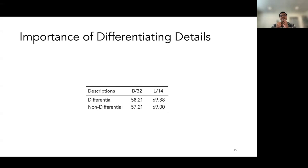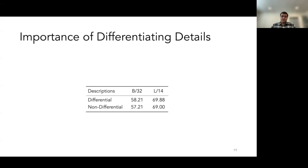We analyze what drives the value of differentiating details. We define two types of descriptions: differential descriptions, which are attributes that differentiate ambiguous classes, and non-differential descriptions, which are factually correct but do not separate ambiguous classes — such as both sparrow and wren being brown. We observe that being factually correct and providing additional information, although helpful, is suboptimal. The additional information specifically needs to differentiate the ambiguous classes.